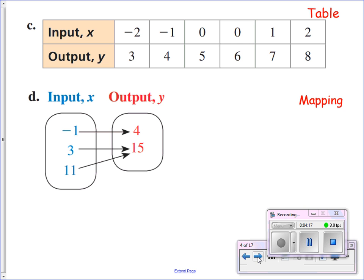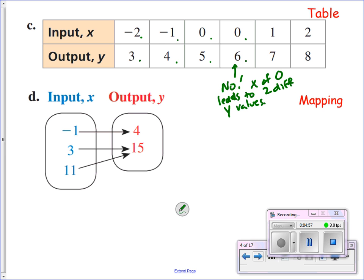For letter C, here you can see a table. We're still getting x's and y's as inputs and outputs, and we're still looking to see if we have a function. For an input of negative two, output of three. Input of negative one, output of four. Input of zero, output of five. Input of zero, output of six — wait a second. That can't be a function because our input of zero leads to two different y values, two different outputs: five and six. That's what we don't want — the same input going to two different outputs.